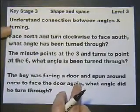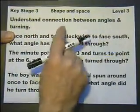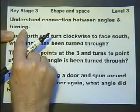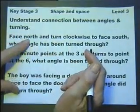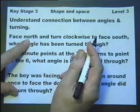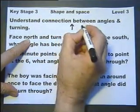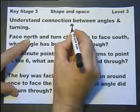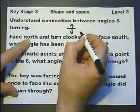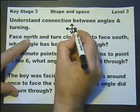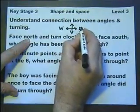First up we've got understanding the connection between angles and turning. So, if we face north, we do need to know which way is north, don't we? So let's do that first. That's north, isn't it? That's south. And what about this one and this one? Many ways of remembering it. I've got my way, I hope you've got yours.